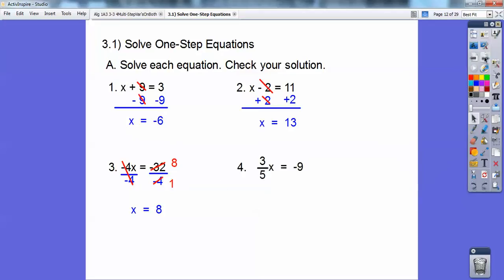This one here, now I have a fraction. In chapter 2, we did what was called the multiplicative inverse. So that's what I'm going to do is multiply both sides by the inverse, which is 5 thirds. So when I do that on the left over here, the 5s cancel, the 3s will cancel.